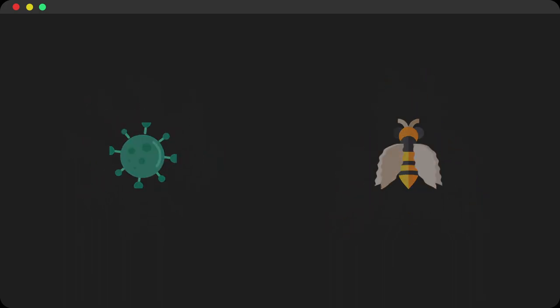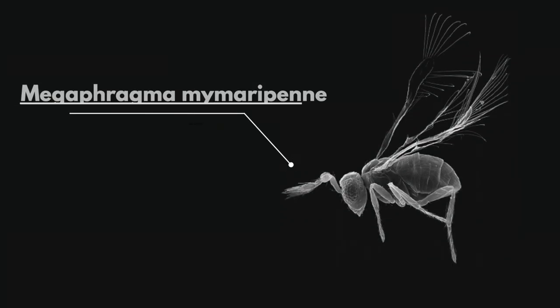What you are seeing here is one of the tiniest creatures on earth. Its name is Megaphragma mymaripenne, which I obviously can't pronounce. It is also commonly called a fairy wasp, and this wasp measures around 200 micrometers.